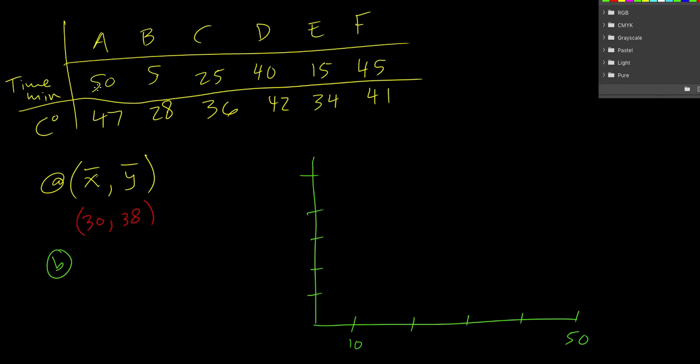And then I just plot those points. So I go 50, 47. Wait a second. I did that backwards. So I want to go 5, 28. 25, 36, 40, 42, and then 34. About there.